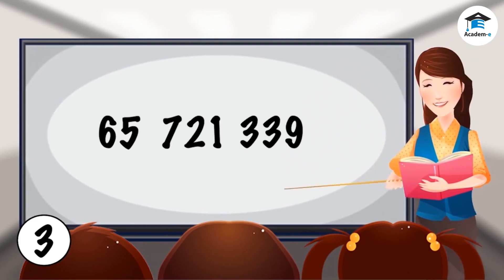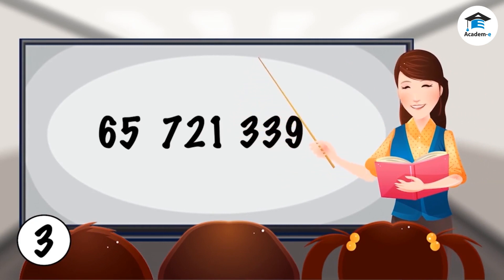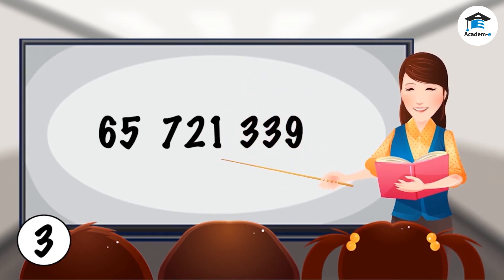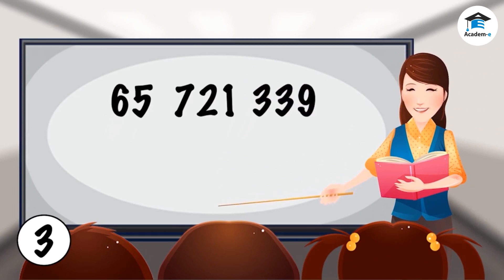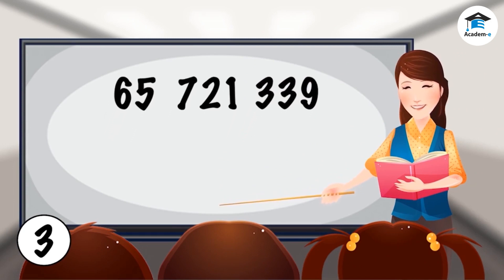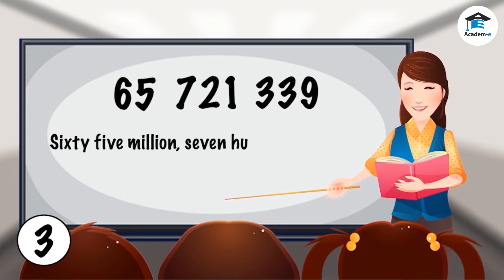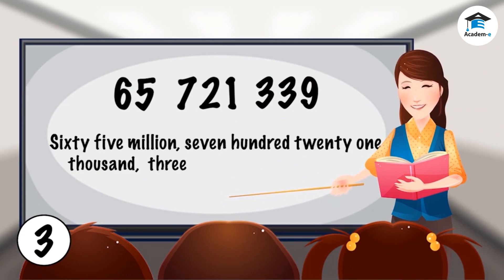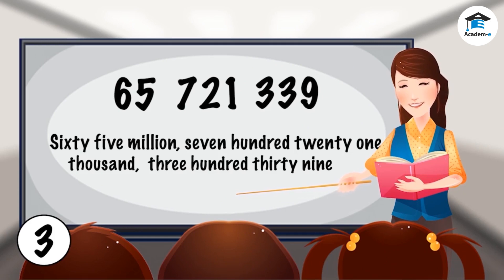A number can be written both in standard form and in words. Try to read this number. Let's see if you read it correct. Let's read it all together: 65,721,339.